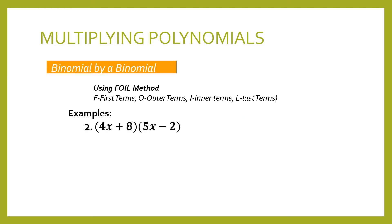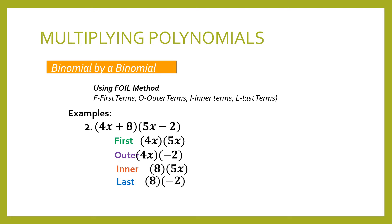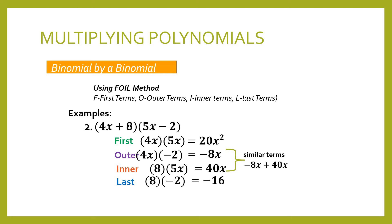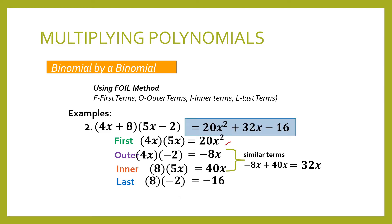Let's move on to example number 2. We multiply the quantity 4x plus 8 times the quantity 5x minus 2. We identify the first, outer, inner, and last terms. Using those pairings, we multiply: 4x times 5x is 20x squared; 4x times negative 2 is negative 8x; 8 times 5x is 40x; 8 times negative 2 is negative 16. We have similar terms negative 8x and 40x; we add them and the result is 32x. So we have 20x squared plus 32x minus 16.